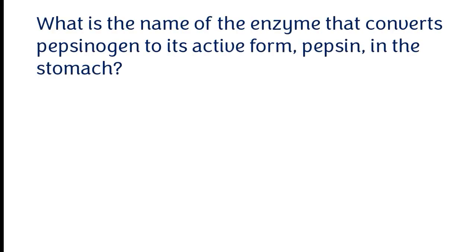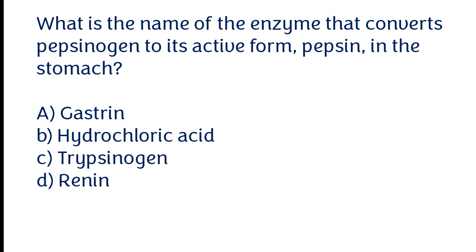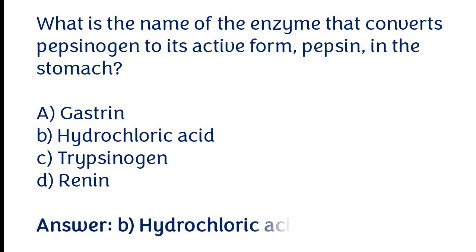What is the name of the substance that converts pepsinogen to its active form pepsin in the stomach? Options: a) Gastrin, b) Hydrochloric acid, c) Trypsinogen, d) Renin. The correct answer is option B. Hydrochloric acid converts pepsinogen to its active form pepsin in the stomach.